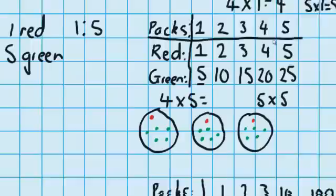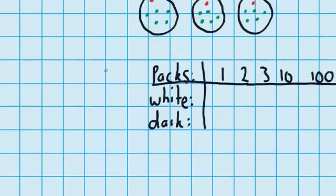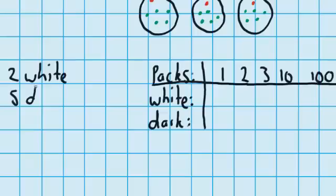Let's try another question. This time I'm imagining packs of chocolate. In each pack there are two pieces of white chocolate and five pieces of dark chocolate. Just like last time I've got a table to help. At the top I've got packs: one, two, three, then a big jump up to ten, and then a really big jump up to one hundred packs. So you can see that using pictures is not going to be a good way to answer this question.